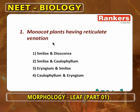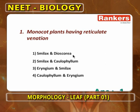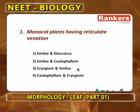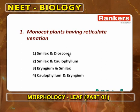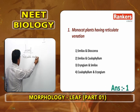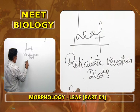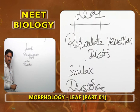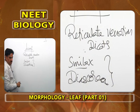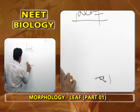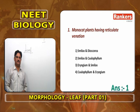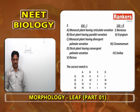First question: monocot plants having reticulate venation. Monocot plants having reticulate venation are Smilax and Dioscorea. Calophyllum, Eryngium and Smilax are given only to confuse you. Normally reticulate venation is found in dicots, but there are exceptions like Smilax and Dioscorea — these two are monocots with reticulate venation.